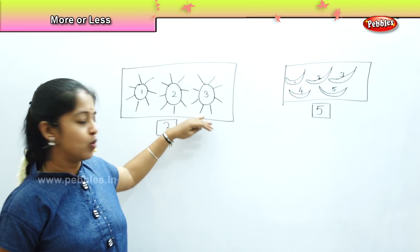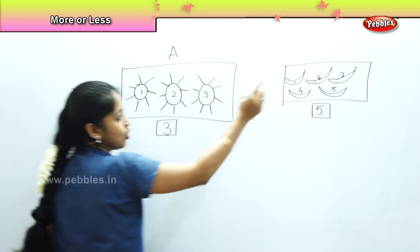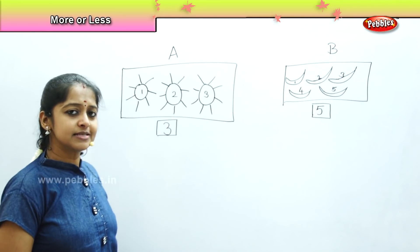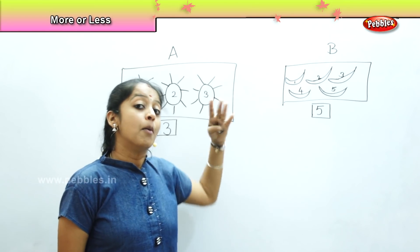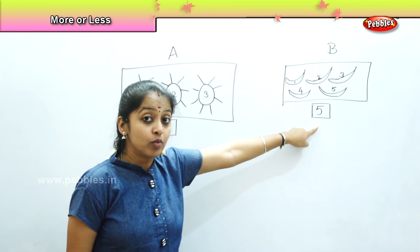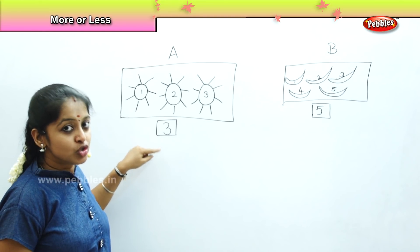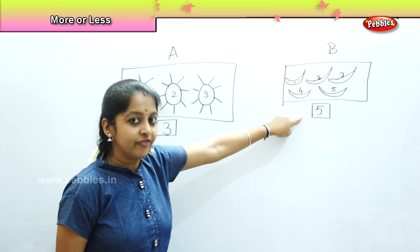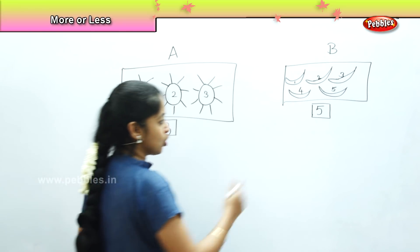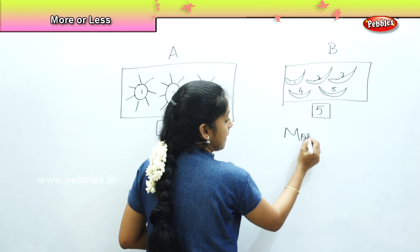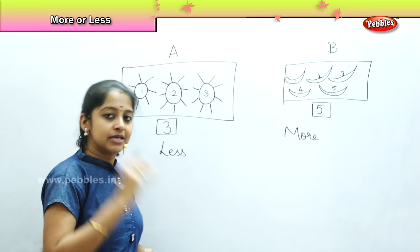So which number is more? Box A has more or box B has more? Box B has more. There are five moons, whereas in box A there are only three suns. So we can say that box B is more and box A is less. More means where the number is greater, and less means where the number is in lesser quantity.